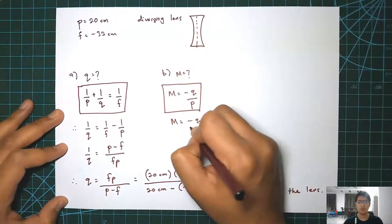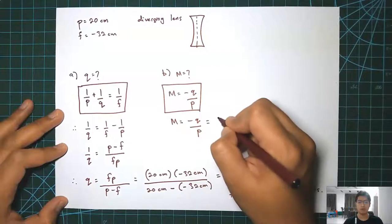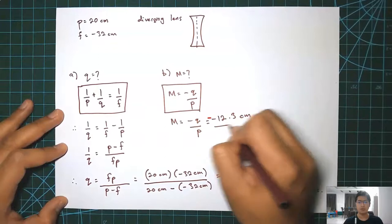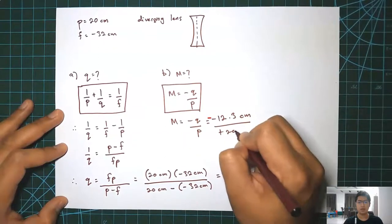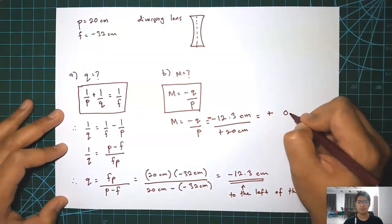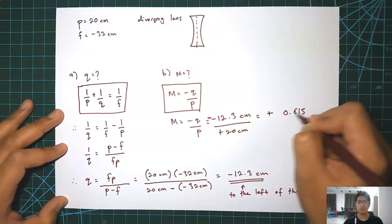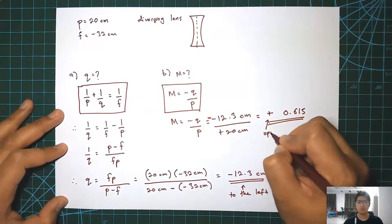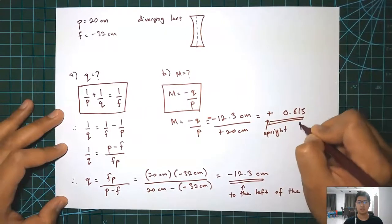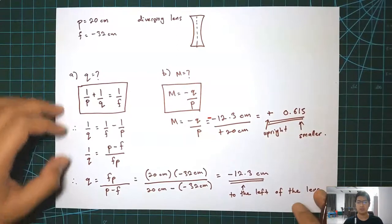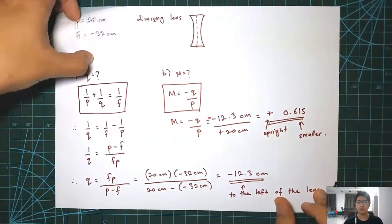So M equals to negative Q over P. Insert the value: negative 12.3 divided by 20cm. So the positive means upright, and because it is smaller than 1, then it is smaller.